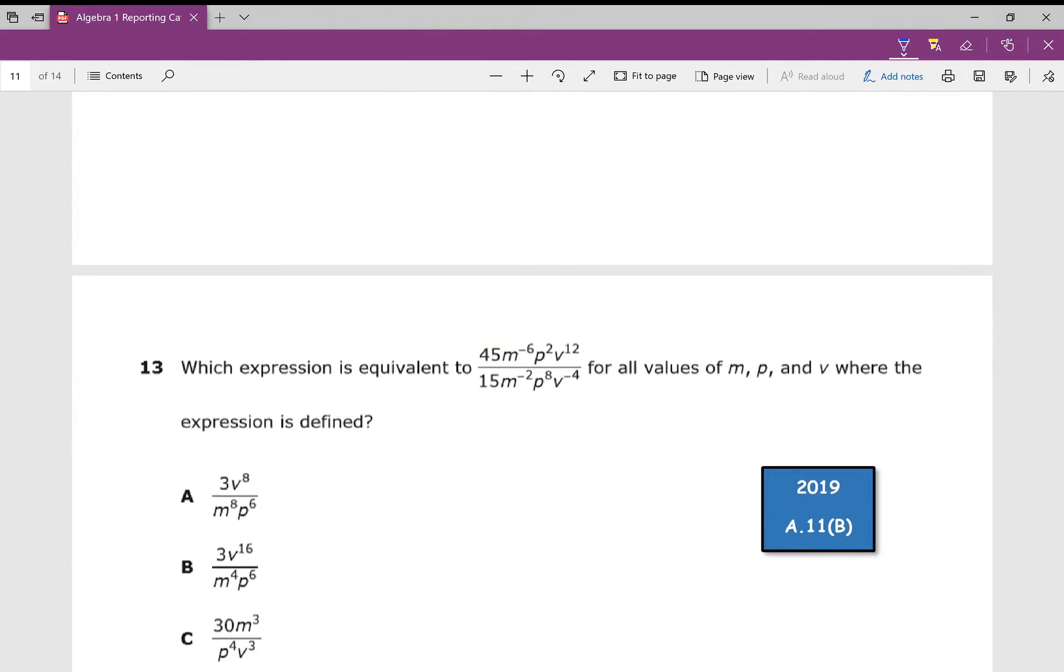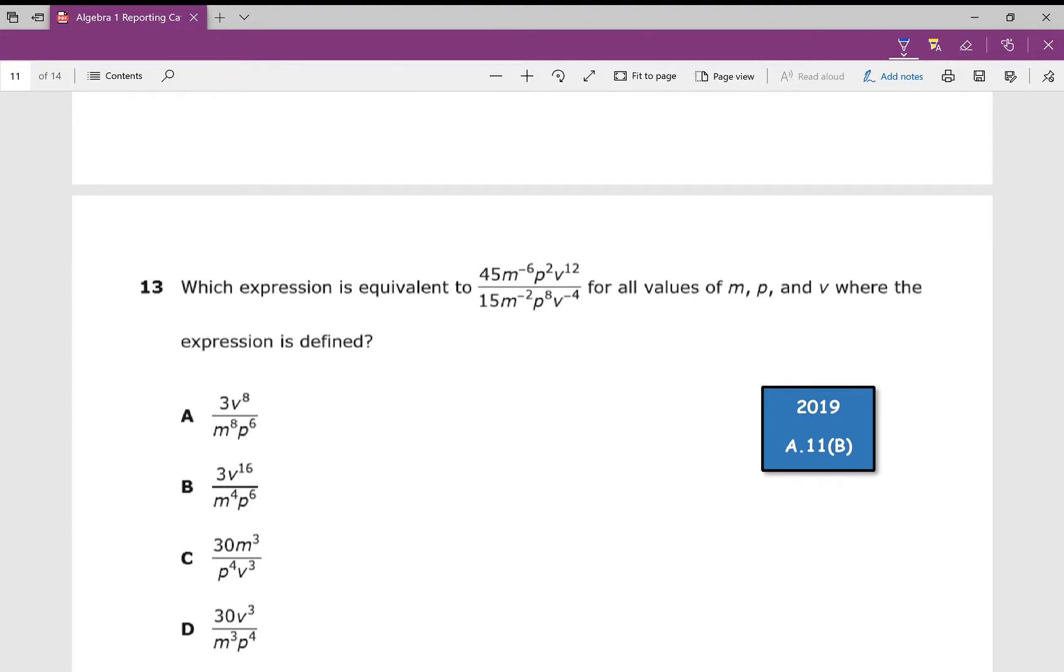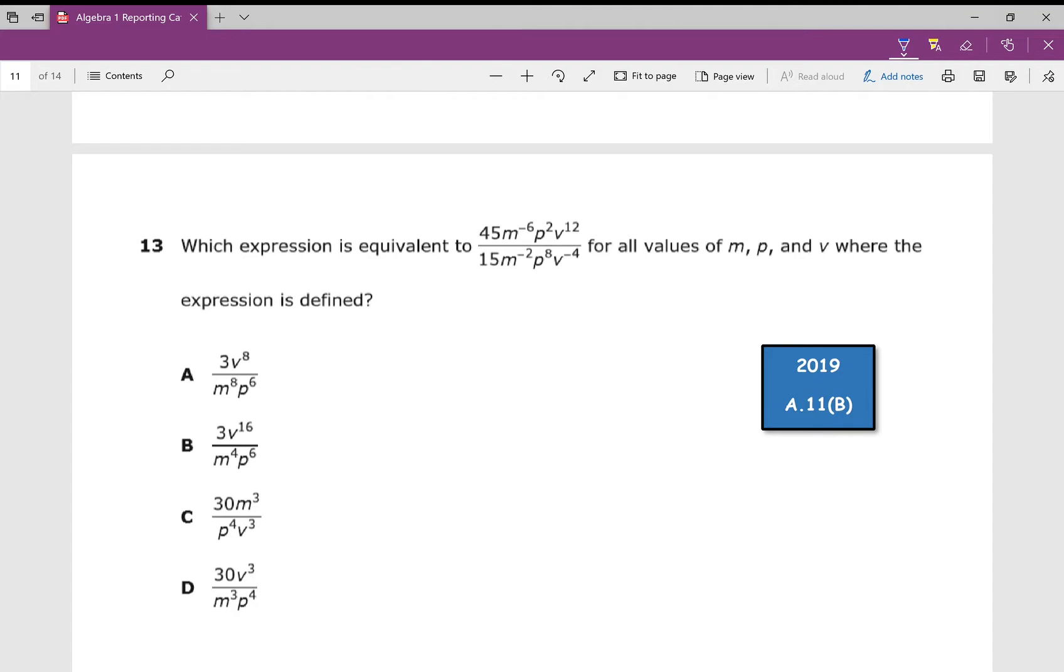Let's move on to number 13. Which expression is equivalent to? Instead of going over the exponent rules, I'm going to go over how you can do this if you've struggled with your exponent rules. So equivalent to, we can store in some values. We've got a variable m, a variable p, and a variable v. I could store in 2 for m, I could store in 3 for p, I could store in 4 for v. Once I get those entered, I can make this expression look exactly like this by going to alpha then y equals for a fraction.